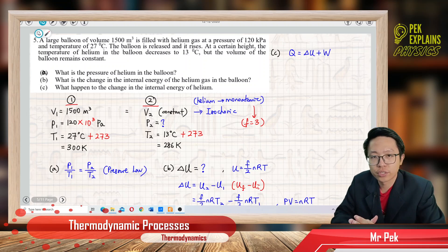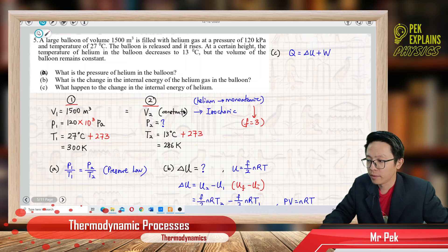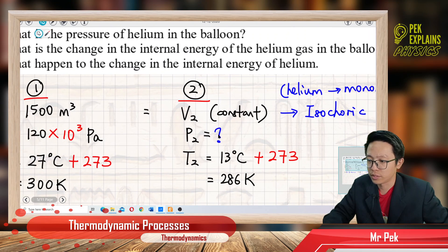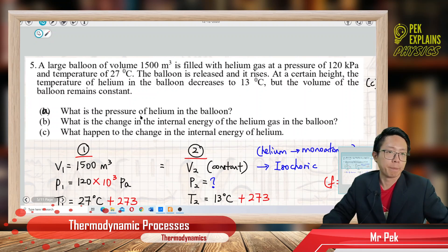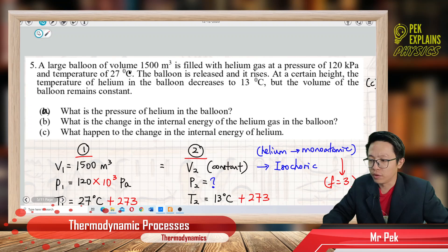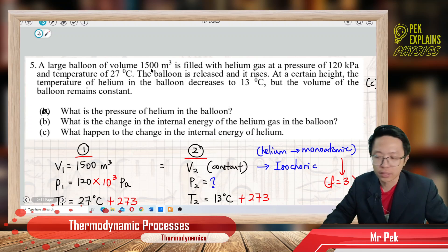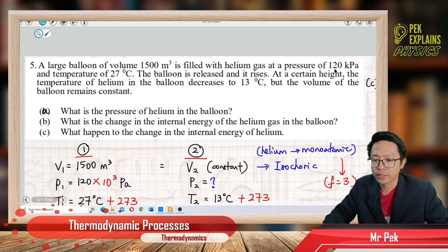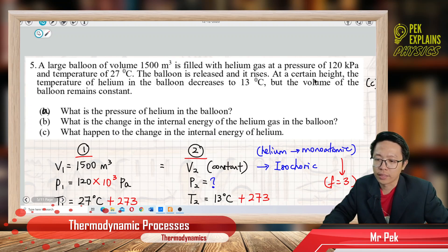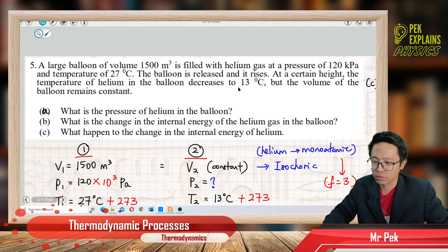Alright, now let us look at question 5. Okay, zoom in for this question. A large balloon of volume 1,500 meter cube is filled with helium gas at a pressure of 120 kilopascal and temperature of 27 degrees Celsius. The balloon is released and it rises. At a certain height, the temperature of helium in the balloon decreases to 13 degrees Celsius but the volume of the balloon remains constant.